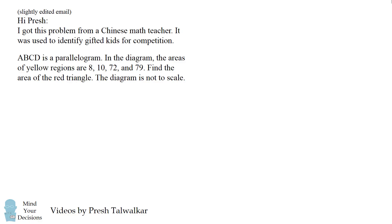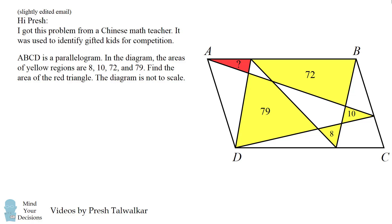ABCD is a parallelogram. In the diagram, the areas of yellow regions are 8, 10, 72, and 79. Find the area of the red triangle. The diagram is not to scale.